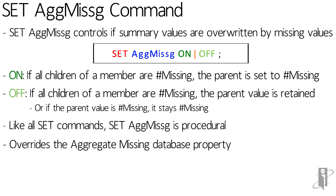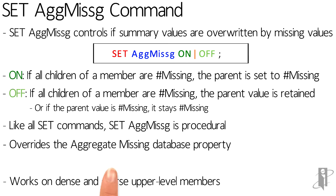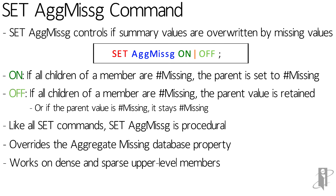This will override the default database property, but you don't have to worry about setting it back again. As soon as the calc script ends, it's going to set it back to whatever the database property started as. It will work on both upper level dense members and upper level sparse members, though normally people really only care about using this on sparse dimensions because it really improves the aggregation speed.